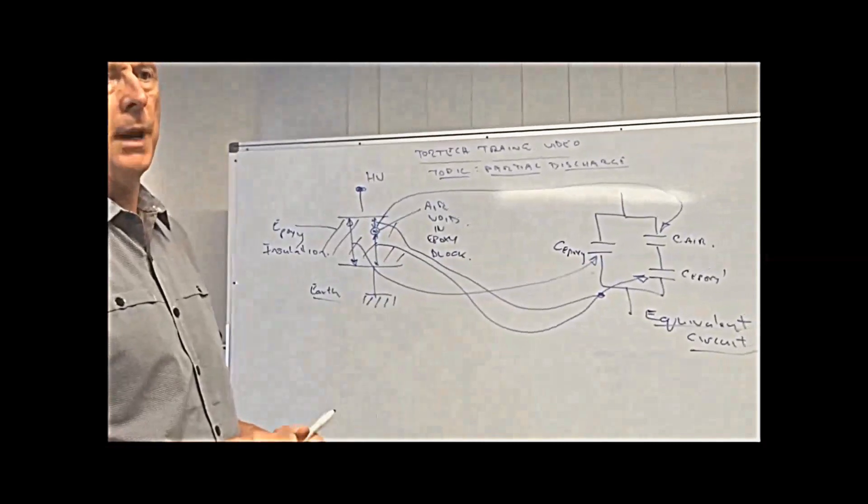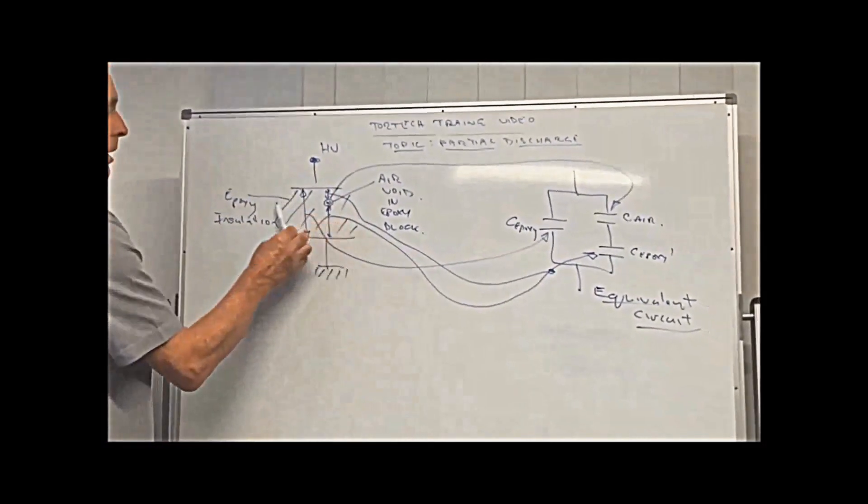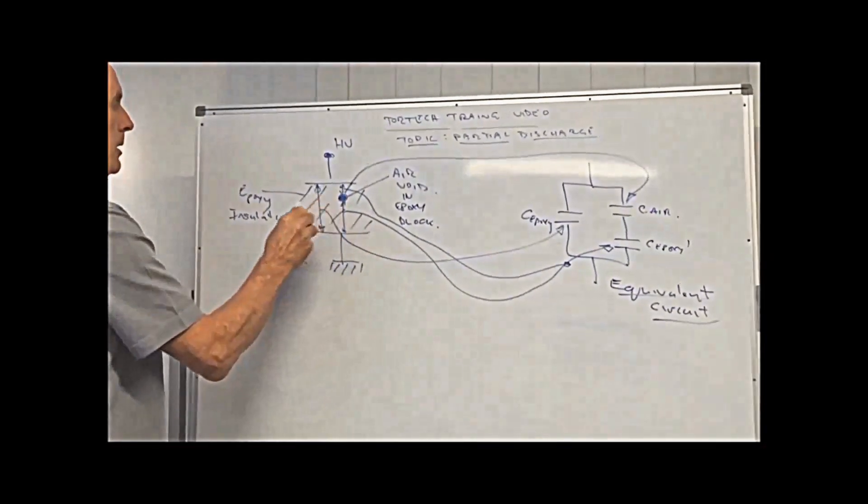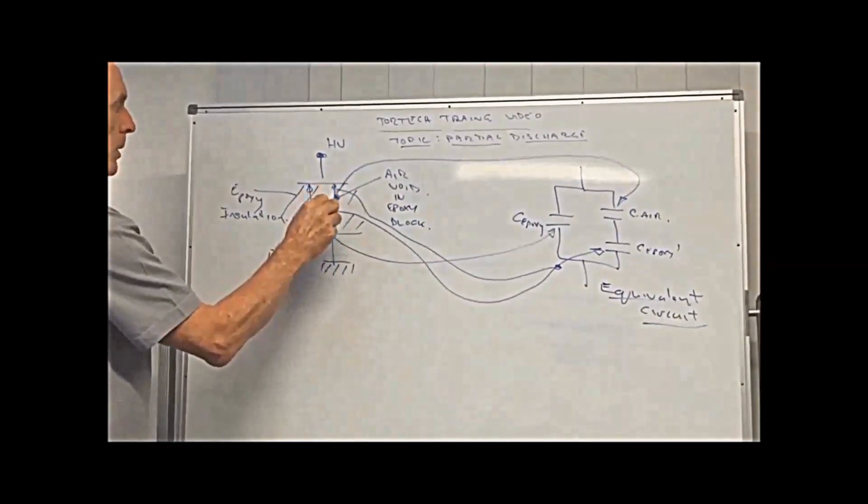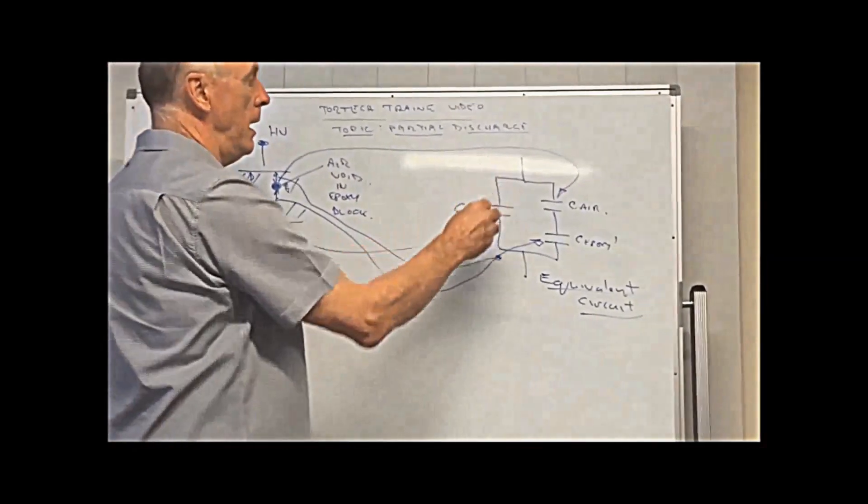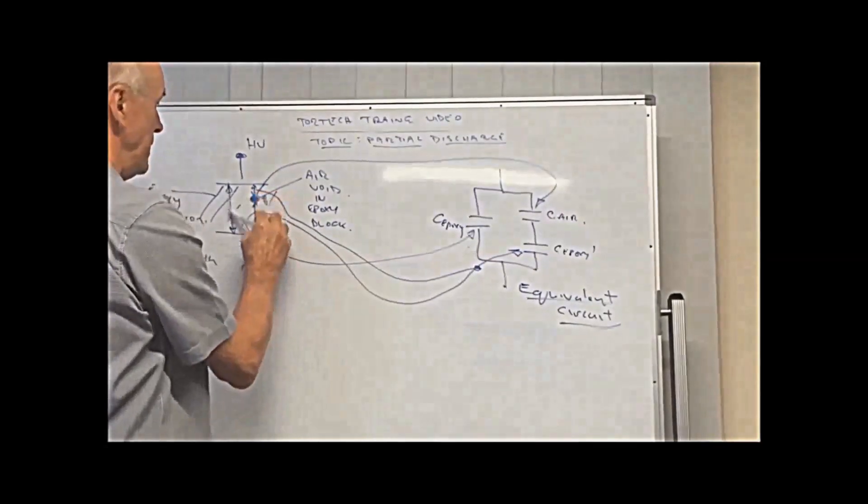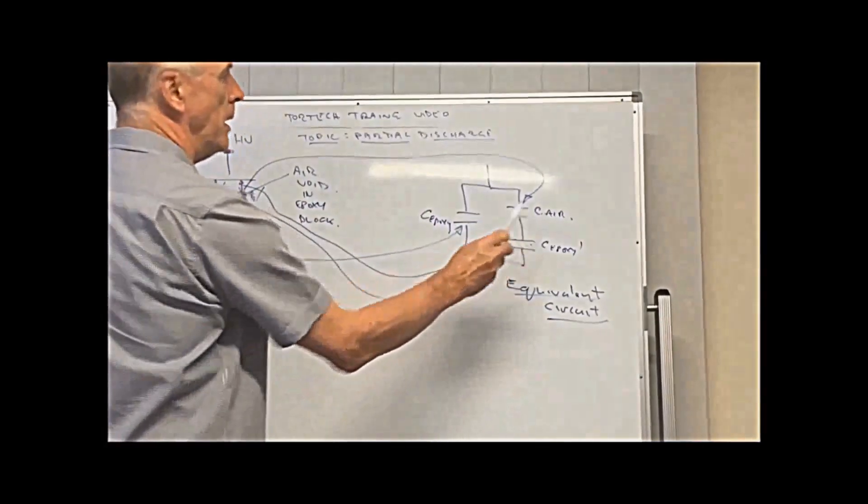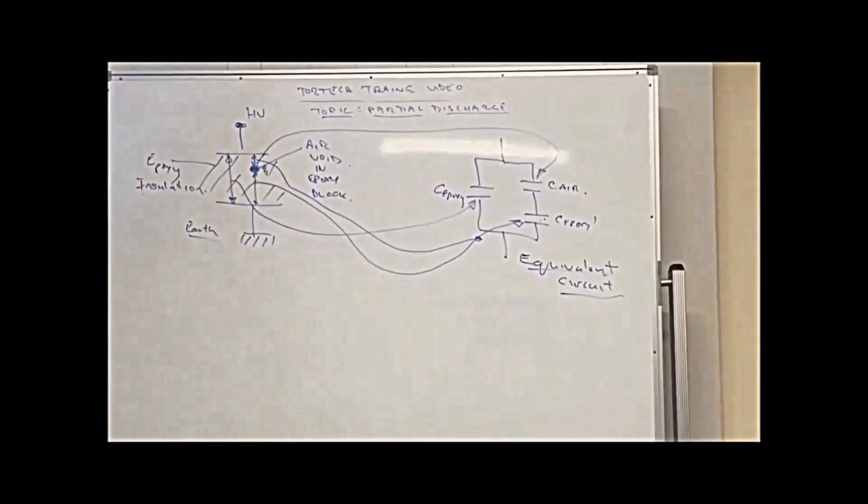So now we take the information that we've just learned from the first stage of this video and we actually build it into a real model. We've actually got an epoxy block here, but with an air void in it. And the air void consists of a number of capacitances. One between there and there, the second one between there and there, another one between there and there, and then one just in the void. And we want to model that. Over here, we model this capacitance as that capacitance there physically like that. This one as being the capacitance in there. And this one being that capacitance and that capacitance combined. That's the equivalent circuit of this insulation block.